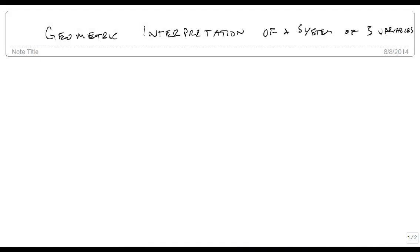So now we're going to talk about a geometric interpretation of a system of three variables. So what we're talking about is how does this look in space? What are these? And the most important thing to recognize is that when we have three variables, what we're talking about are planes.